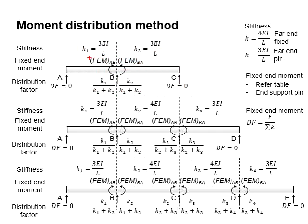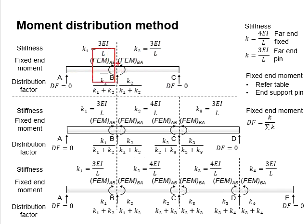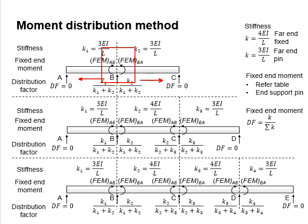Due to various aspects such as the loading and the effective length, which varies between different segments of the beam, the fixed-end moment as the internal force at each side of the support will differ. These differences between the fixed-end moments will later be carried over to the other end of the members.